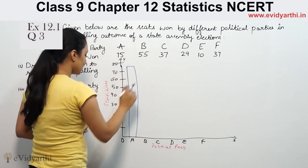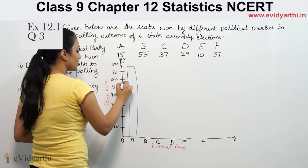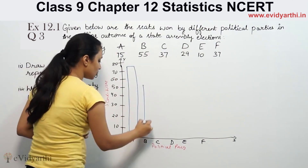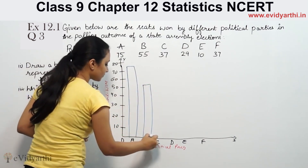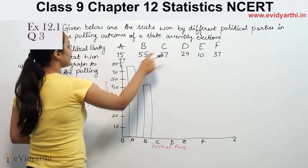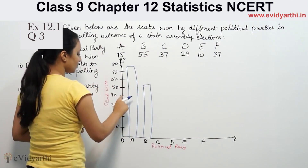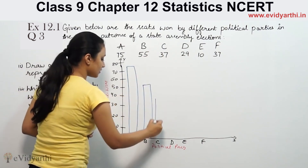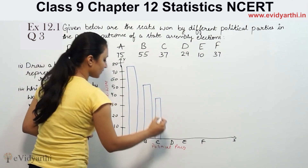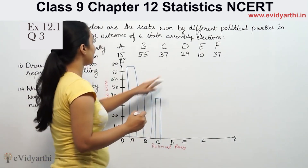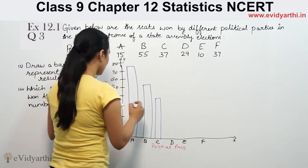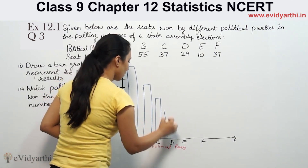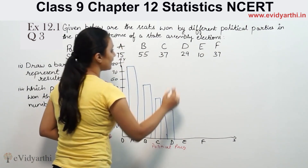Then B is 55. 55 is between 50 and 60 — this is B's bar. Then C is 37 — this is C's bar. Then D is 29, somewhere around here. This is 29.